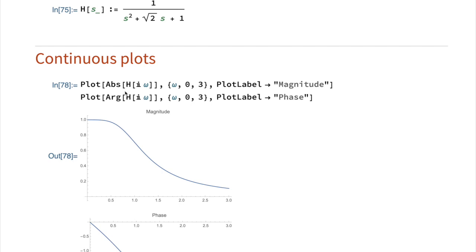So to make the plot, I'm going to call the plot command and take the absolute value of that transfer function with the input as a complex number I times my frequency omega. And omega will vary from 0 to 3, and then I get the magnitude.